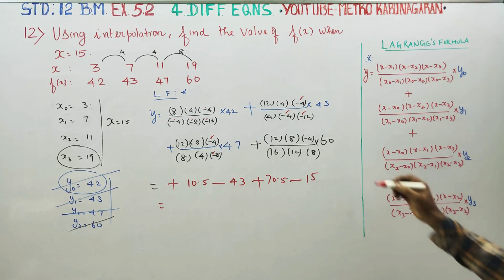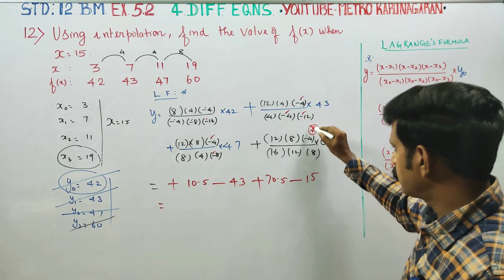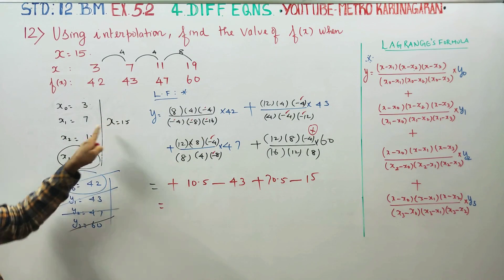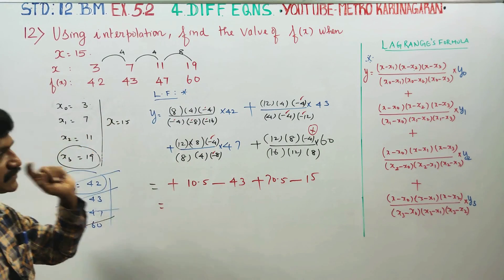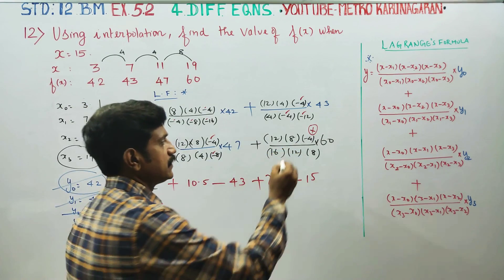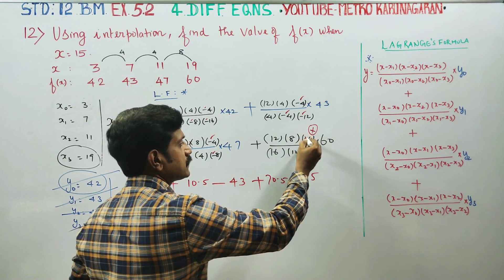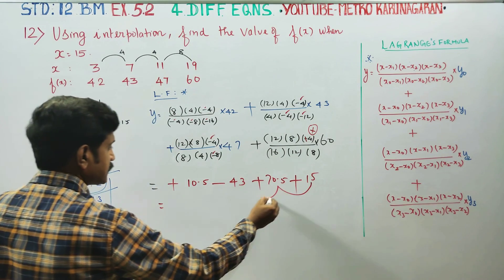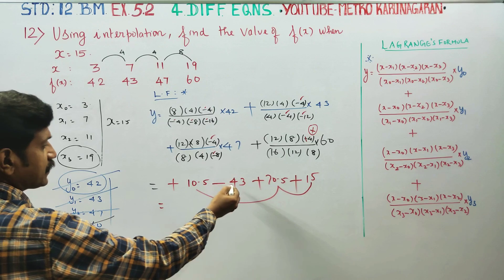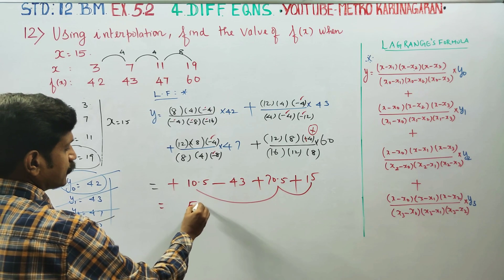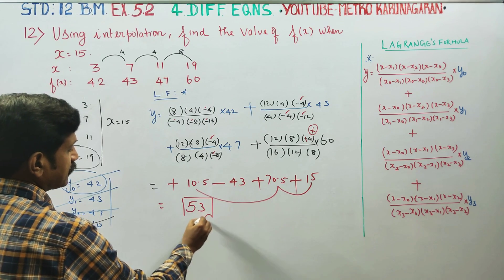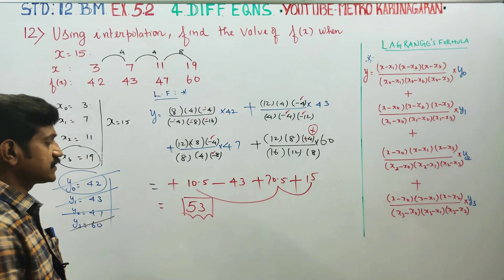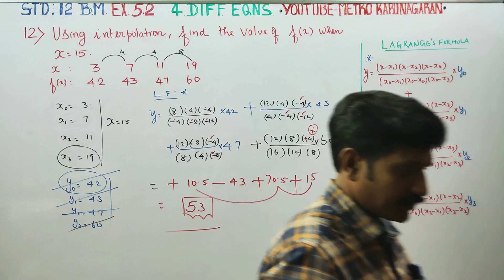Looking at the steps: 15 minus 11 equals minus 4, giving a plus sign. Adding and subtracting: 43 minus gives 53. The value of f(x) when x equals 15 is 53. Your answer is 53. Thank you.